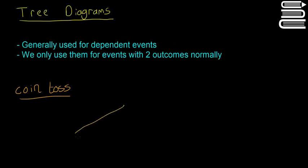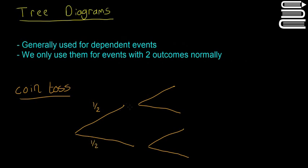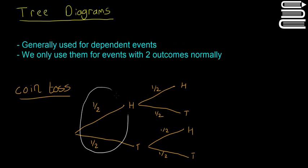We'll start with a really basic example of a coin toss and how a tree diagram can help us. There are going to be two branches, and then two branches again — two different coin tosses. The probability of getting heads or tails is half and half, so H and T, and again the probability of heads or tails is half and half. The first time you flip the coin there's a 50% chance of heads and 50% of tails, and the second flip works the same way regardless of the first result.